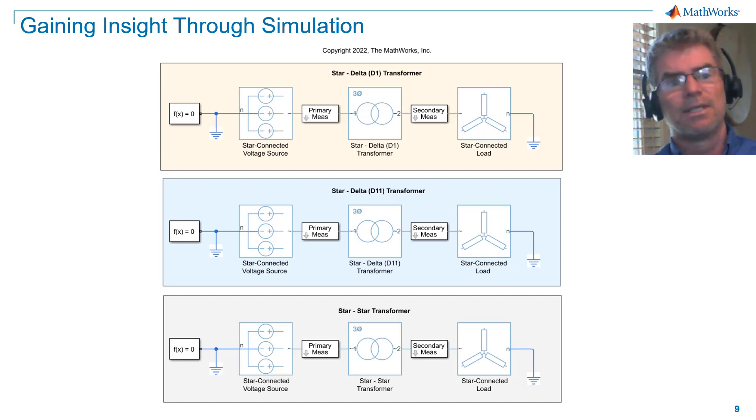What you see here is Simscape Electrical. I put this together to generate the vector data that supports this tutorial. You'll notice I have two different star delta configurations, so-called D1 and D11 configurations. Let's explore this further.